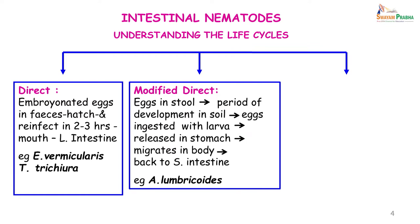Then we have something called a modified direct cycle. This is seen with Ascaris lumbricoides, also referred to as roundworm. Here the eggs are passed in the stool, there is a period of development in the soil, after which the eggs are ingested through contaminated water or food. The larvae are released in the small intestine, migrate through the body, and come back into the small intestine where they mature into adults and the eggs are laid again.